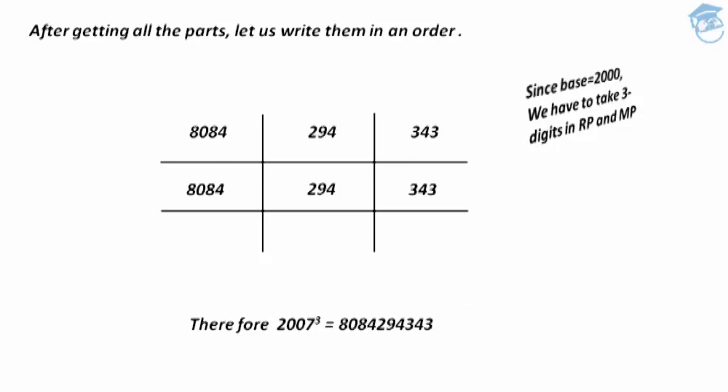Therefore, 2007³ = 8,084,294,343. Friends, this is how we use Avadunam Sutra to find the cube of a given 4-digit number when the base is near numbers like 2000, 3000, 4000, etc. I hope you have understood how to use this Avadunam Sutra. In the next session we will have more examples on the same concept. Thank you for watching, have a nice day.